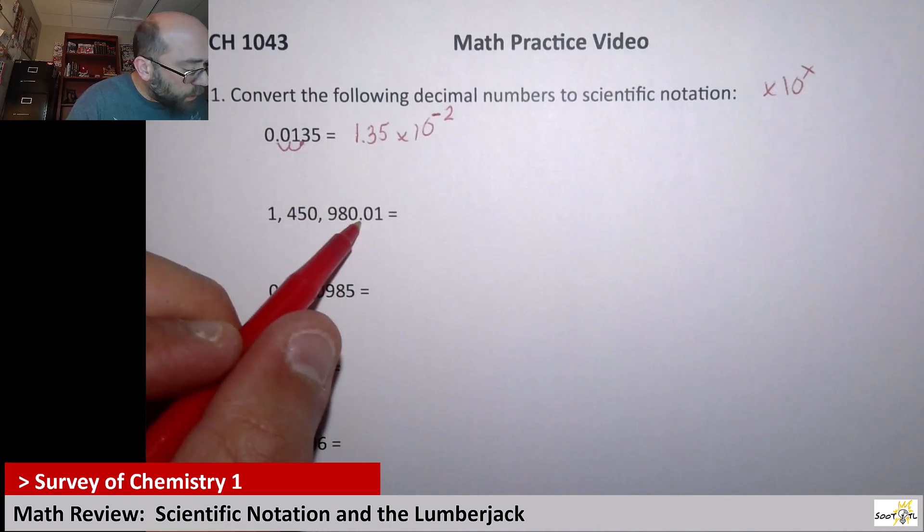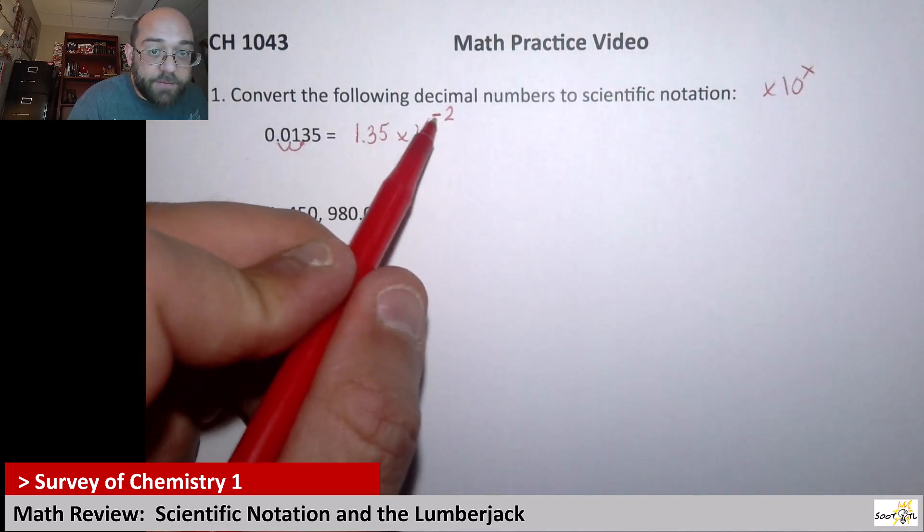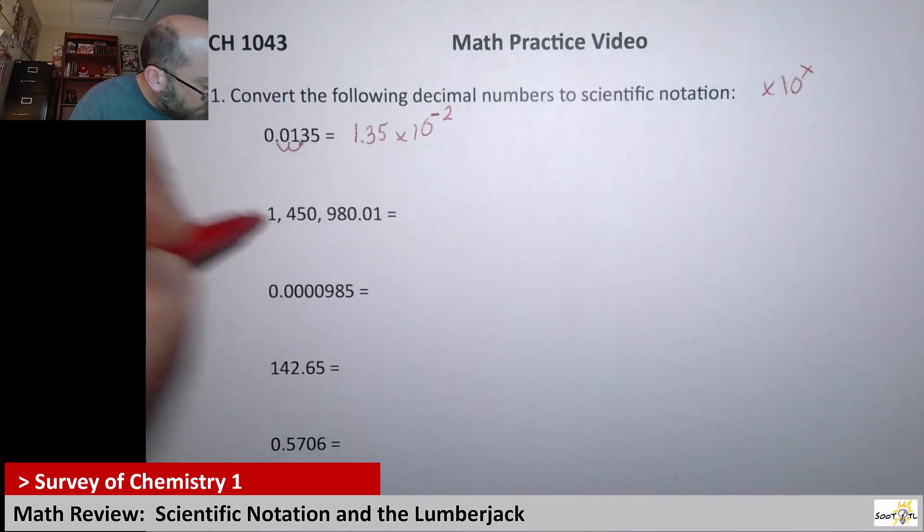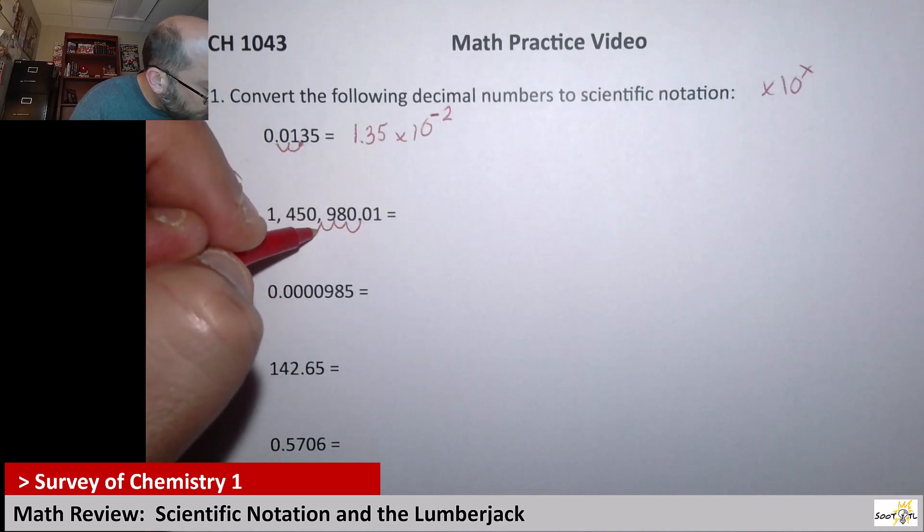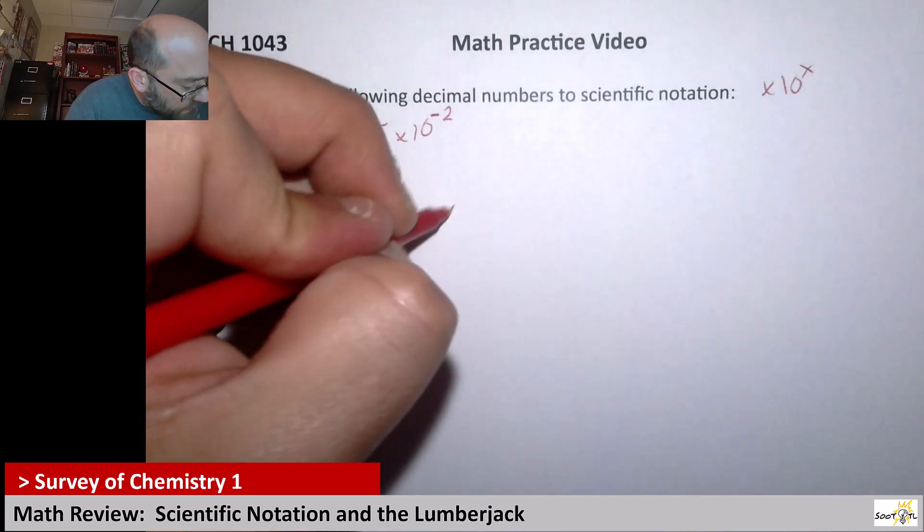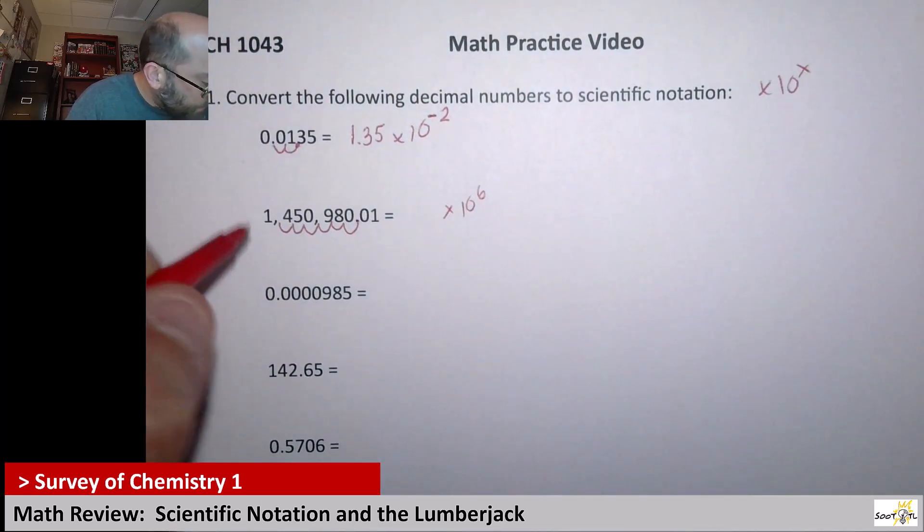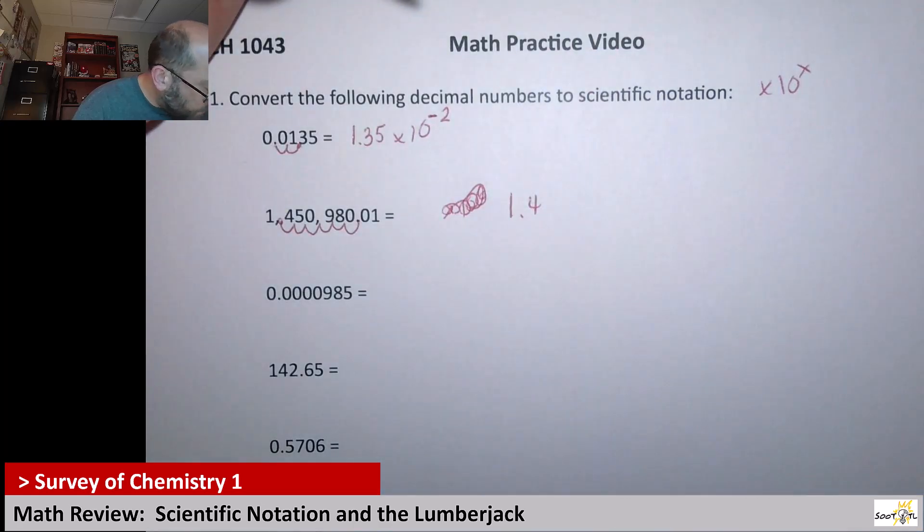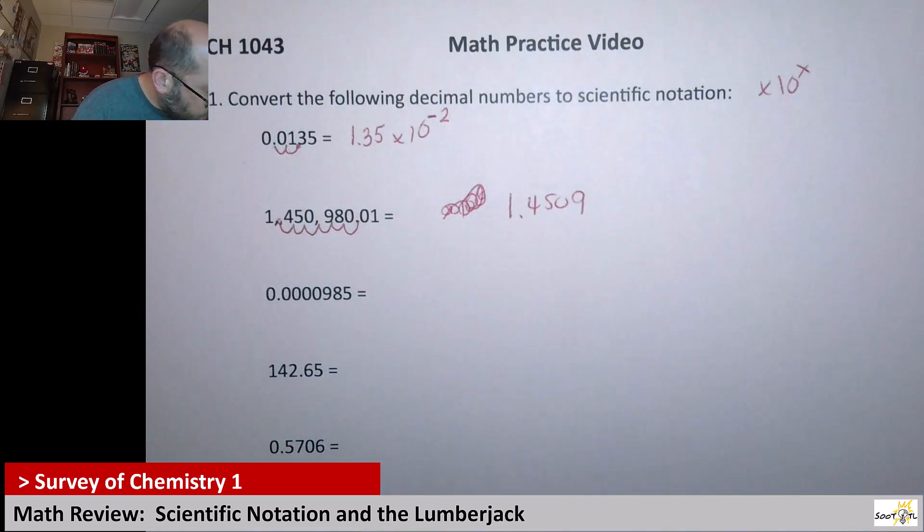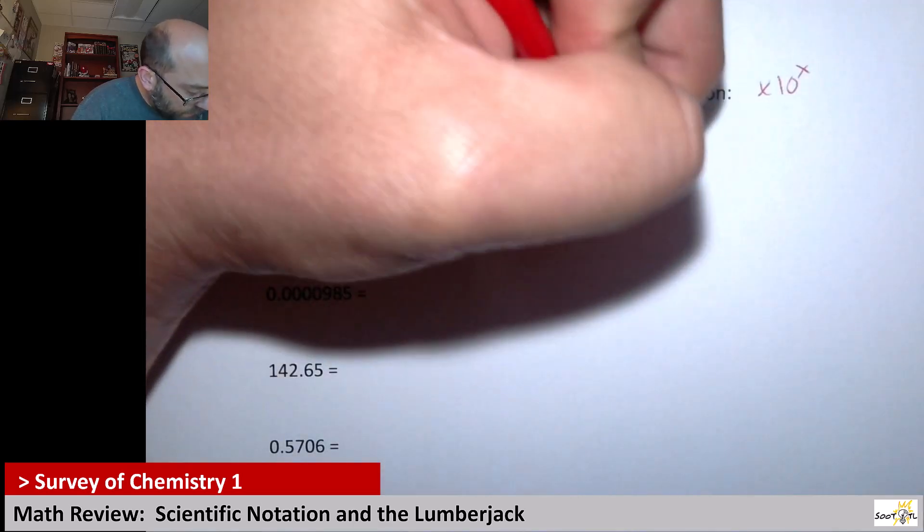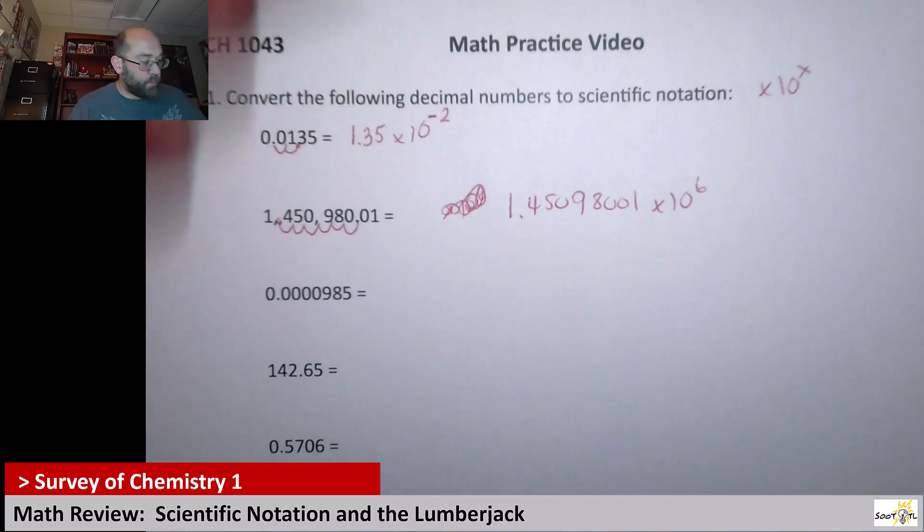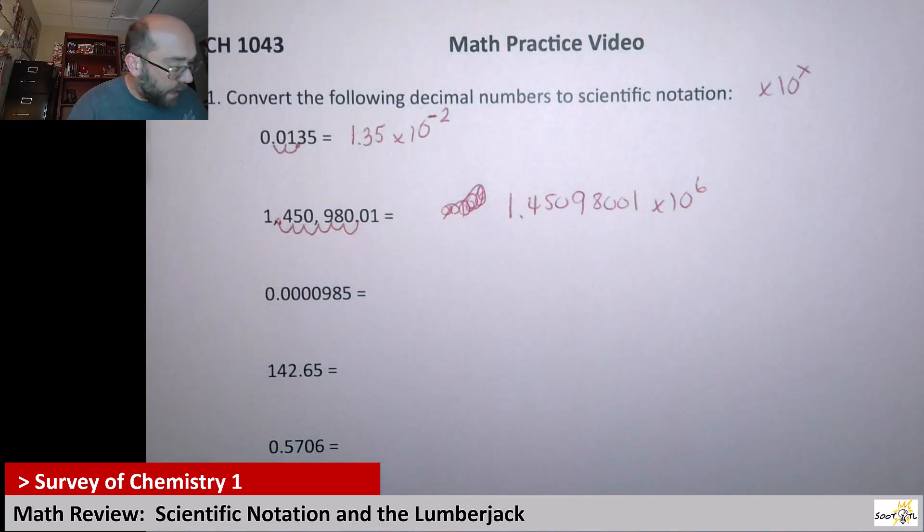Now this next one we're going to go in the opposite direction to the left. So we won't have that negative number there. It'll be a positive. So let's count how many times I have to jump to right behind this one. So it would be 1, 2, 3, 4, 5, 6. So that's times 10 to the positive 6. I need to write this out as a decimal now. So that's going to be 1.45098001 times 10 to the 6, because we said I had to jump that way 6 spots.